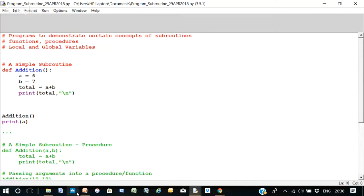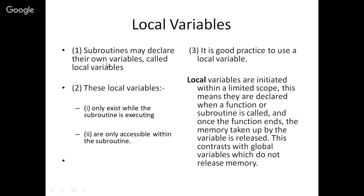Now, if we come back here. So subroutines, they can declare their own variables called local variables. And the local variables only exist whilst the subroutine is executed, and they're only accessible within the subroutine. And I think we have demonstrated that. Now, why is it good practice to use a local variable, do you think? Well, what happens is they are declared within the subroutine, and once the subroutine has stopped executing, the memory taken up by the variable is released. Now, this is in contrast with a global variable, and we'll see what this global variable is about now.